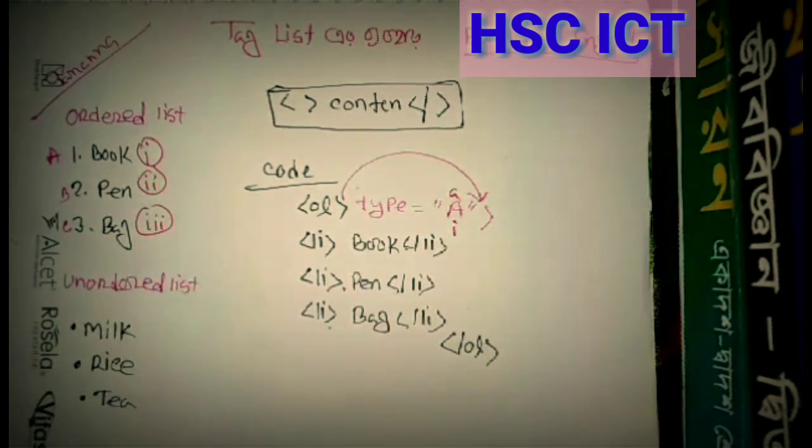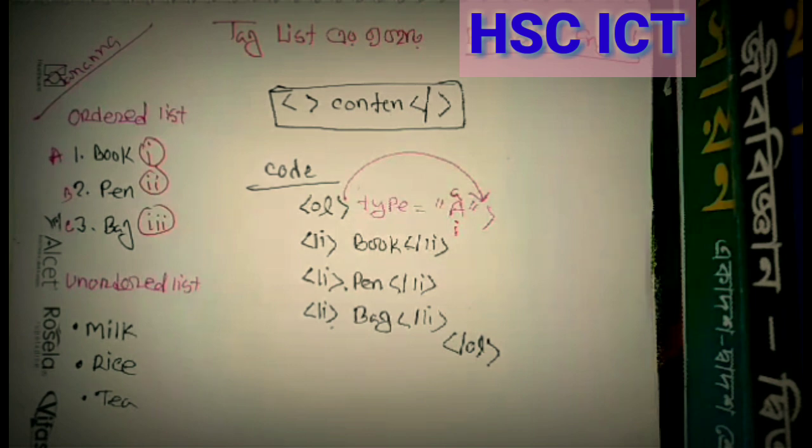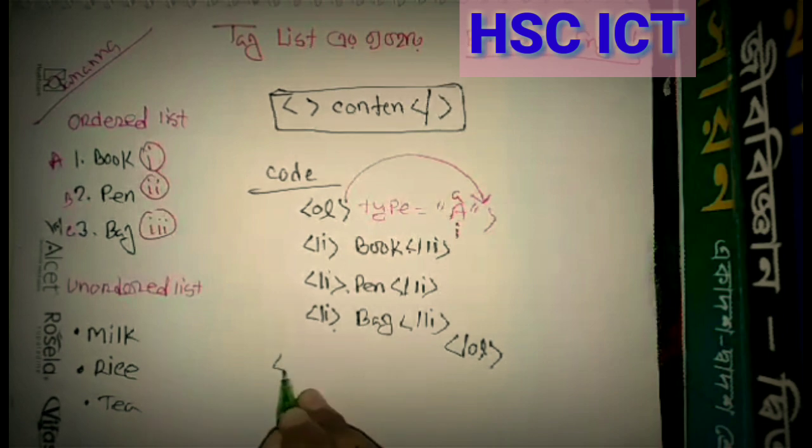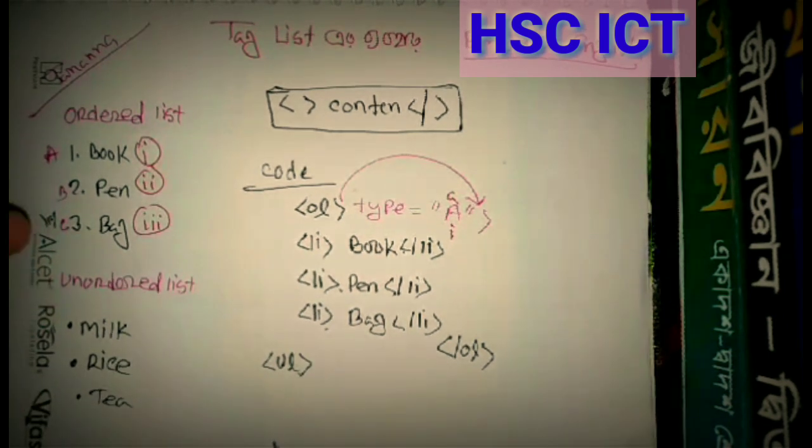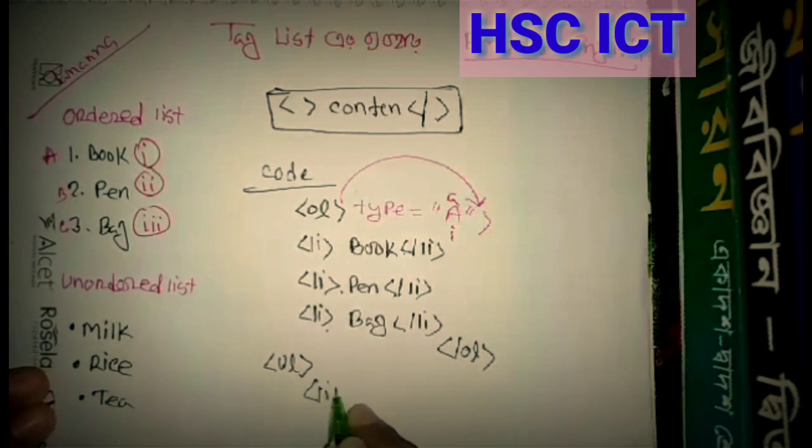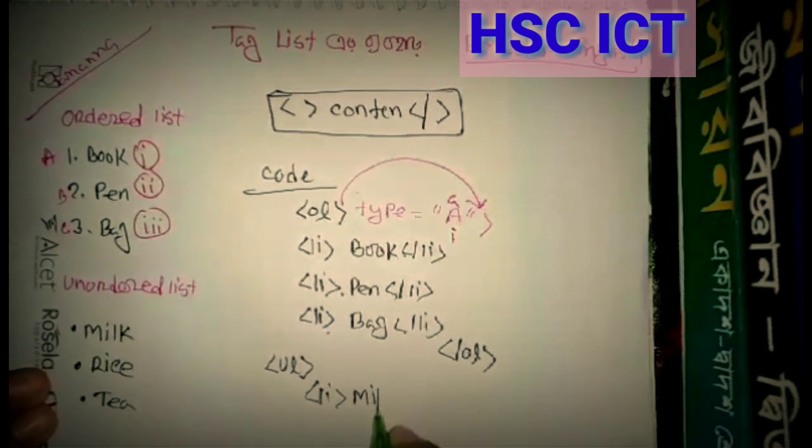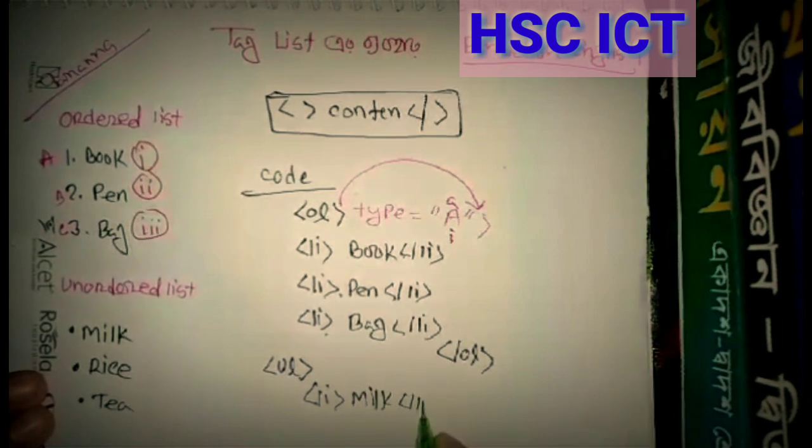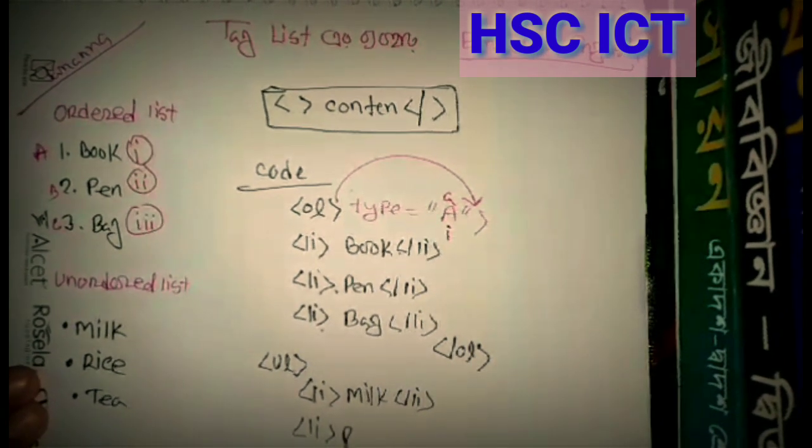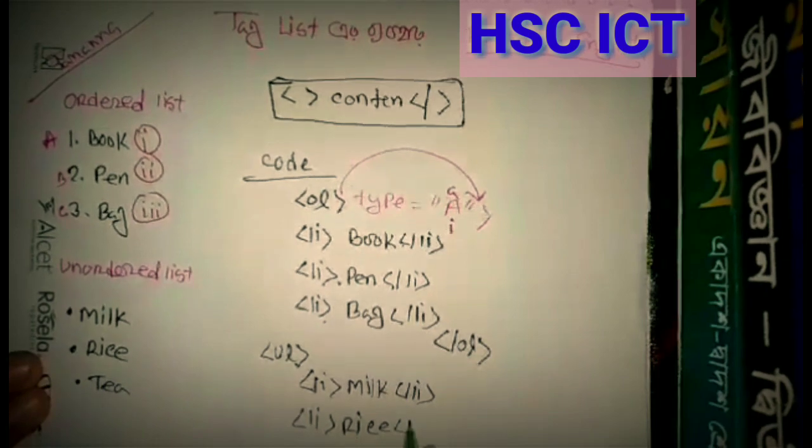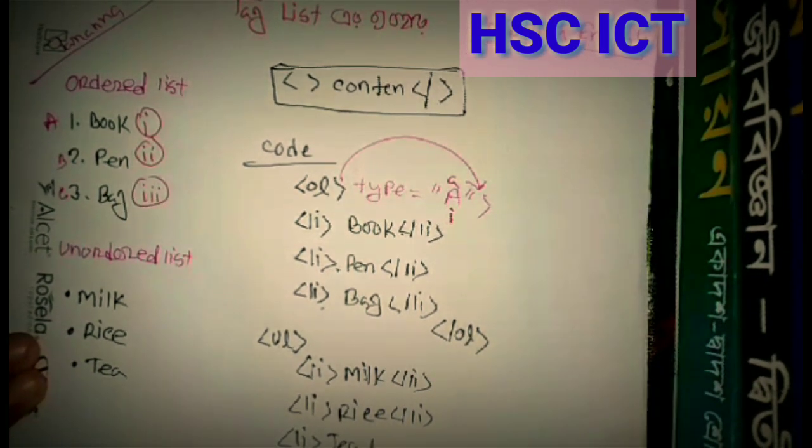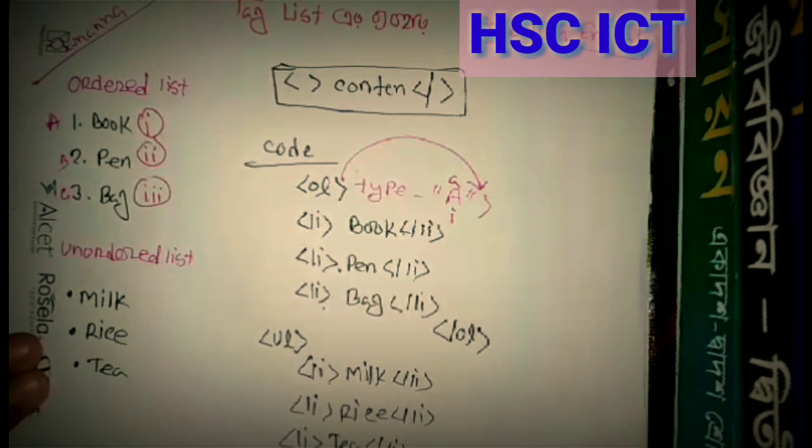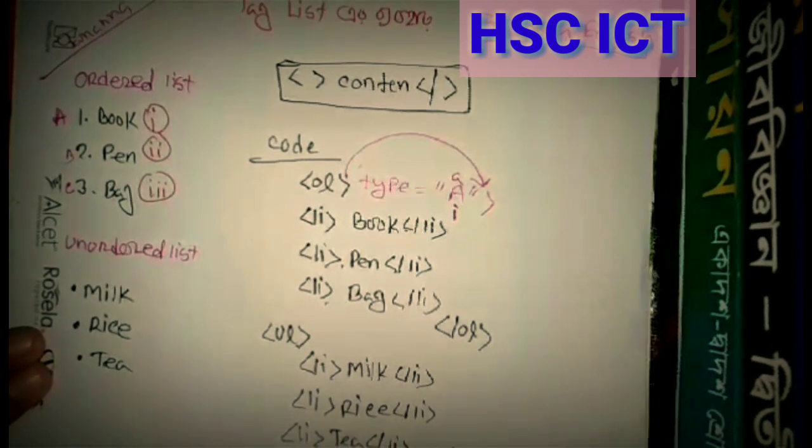I can see the Order List. The Unordered List is called ul. The item is called li. Close the list, close the list.